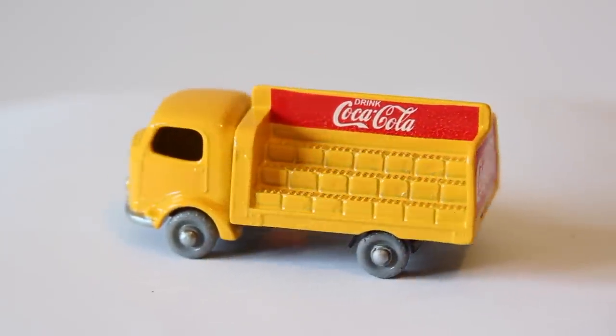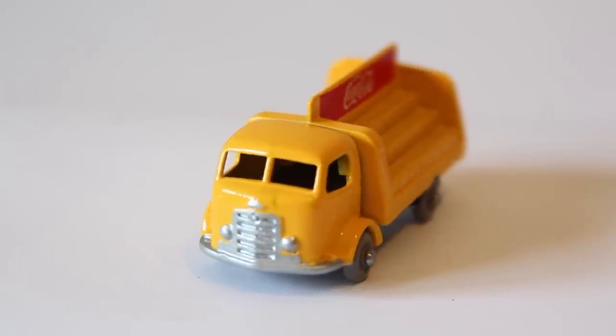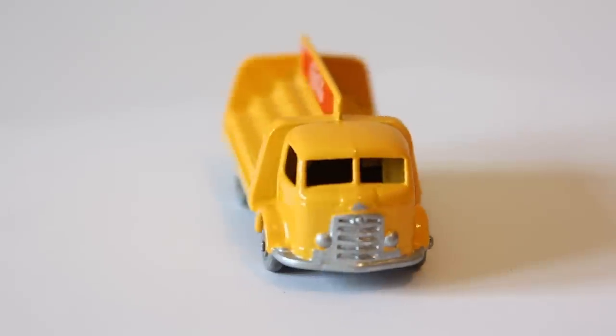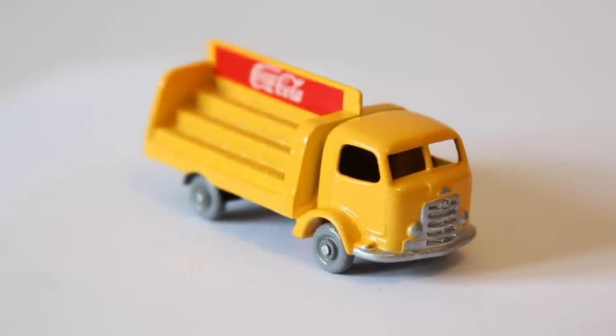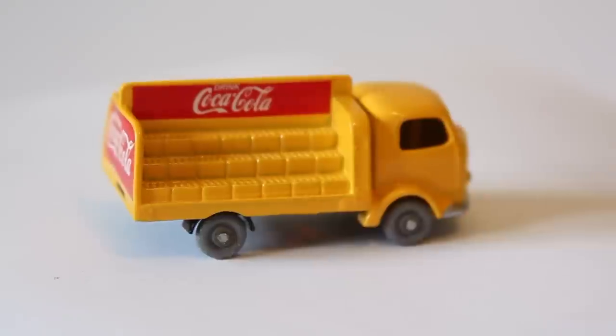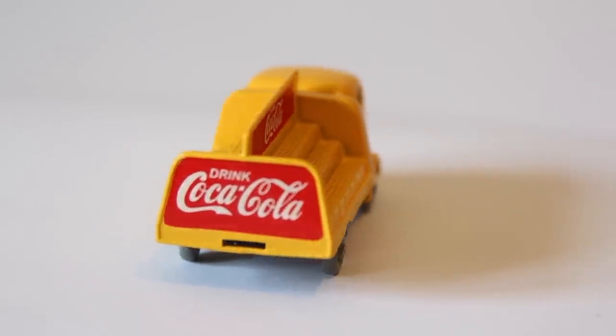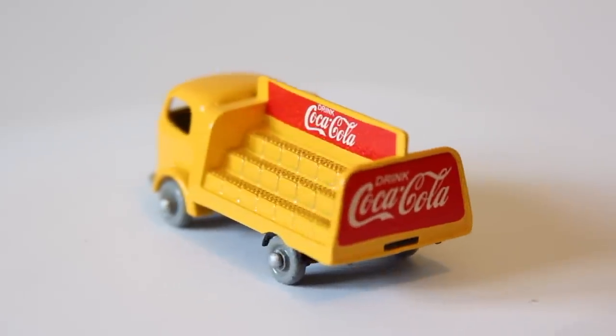I quite enjoy doing these early series models without the interiors. They're just a quick go-to restoration when you may be a bit short on time. But I really enjoy the outcomes. Interestingly the difference between this and the 37A, other than a slight difference in size, is the fact that the bottles are staggered on the original casting. Whereas they're in straight lines for this one.